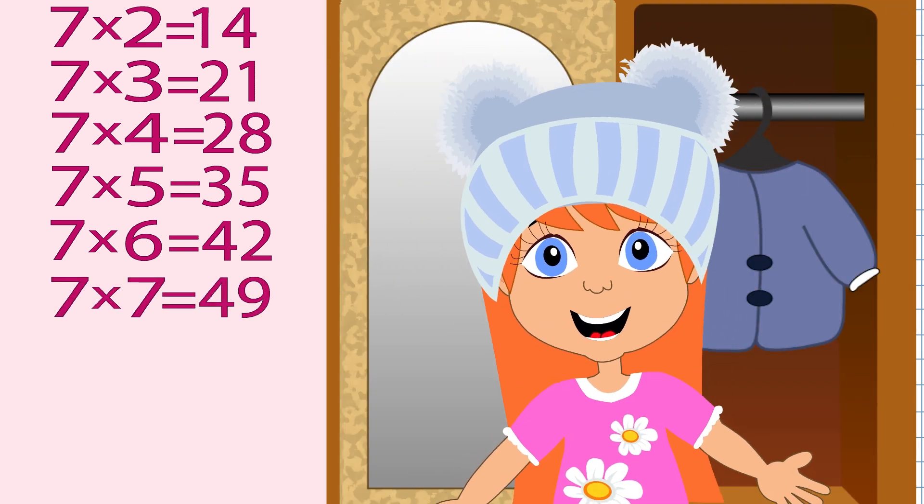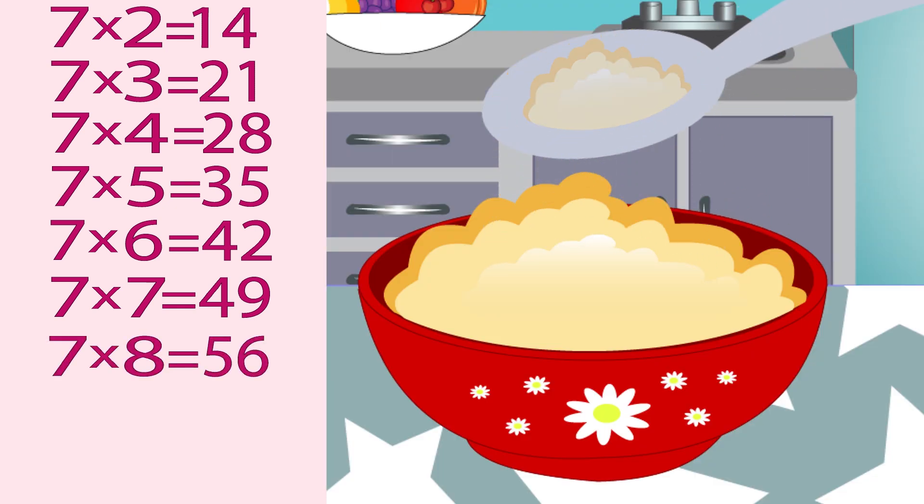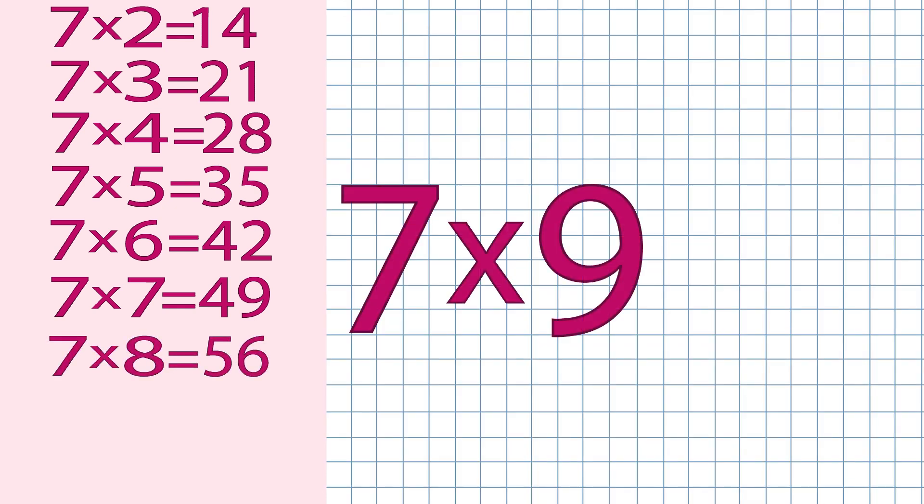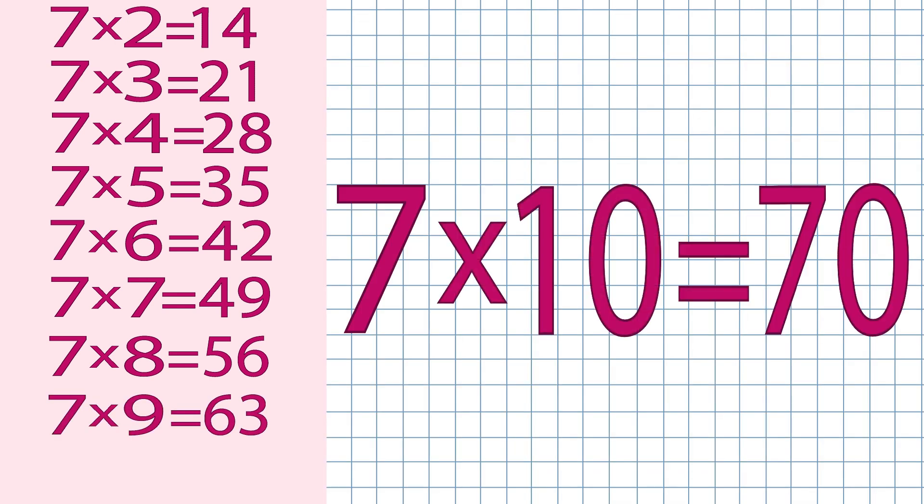Seven times seven is forty-nine. Masha's hustles have fun. Seven times eight is fifty-six. In the morning poor it did. Seven times nine is sixty-three. All the lenses lit up here.